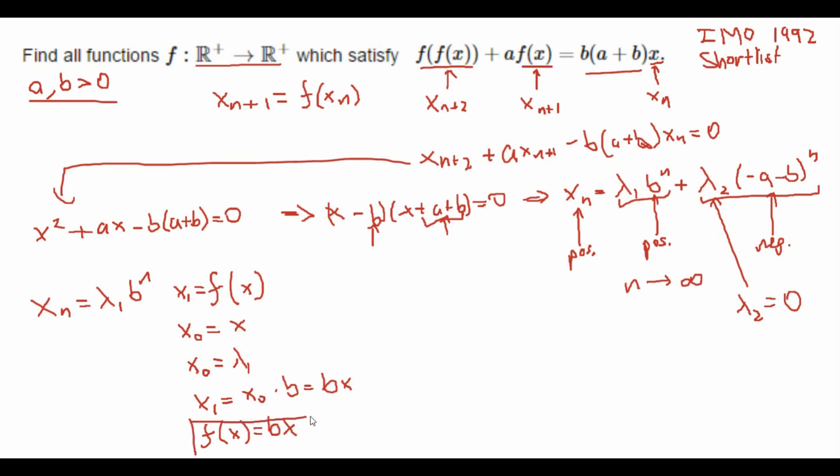And we are done. You may want to check if this solution is correct. Well, let's just try this out. We plug this in twice. f(f(x)) is just b²x plus a*f(x). That's just abx is equal to b(a)x + b²x. Yep, this is indeed correct. So we are sure this is our answer.